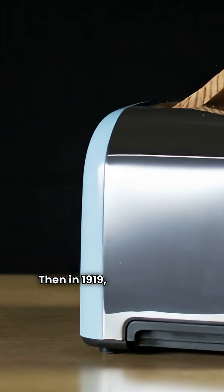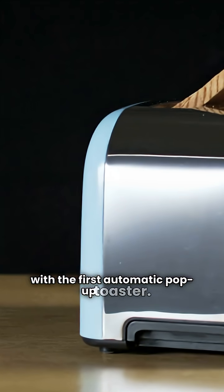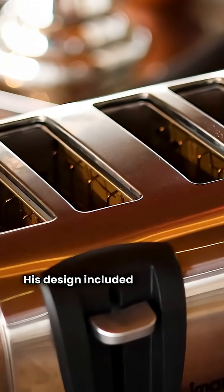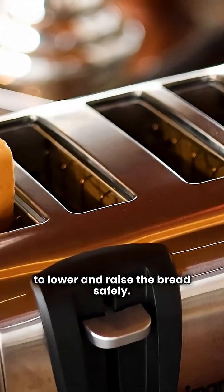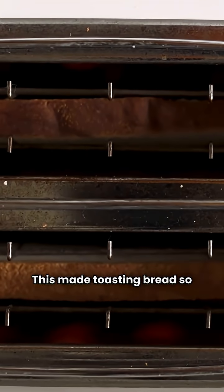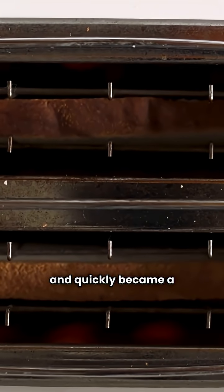Then in 1919, Charles Streit changed the game with the first automatic pop-up toaster. His design included a timer and a mechanism to lower and raise the bread safely. This made toasting bread so much easier and quickly became a household favorite.